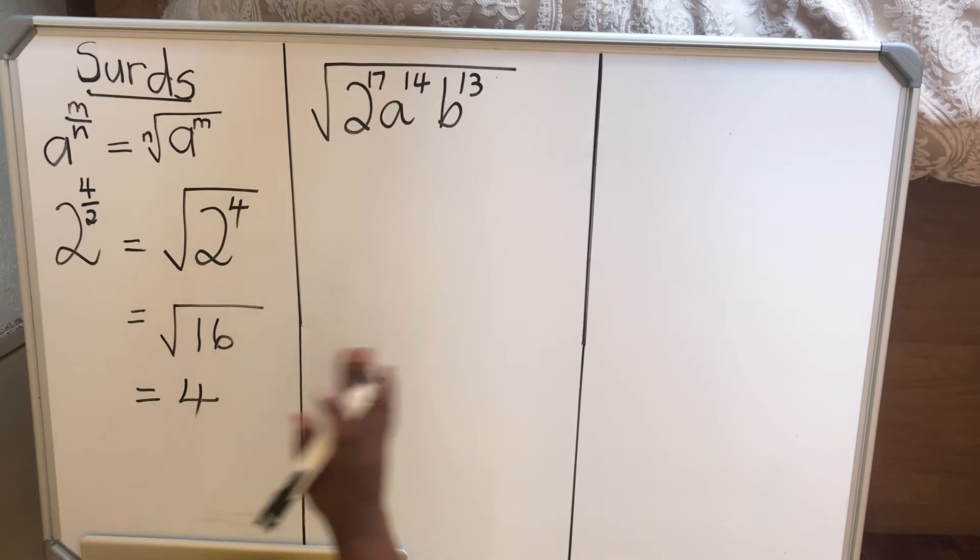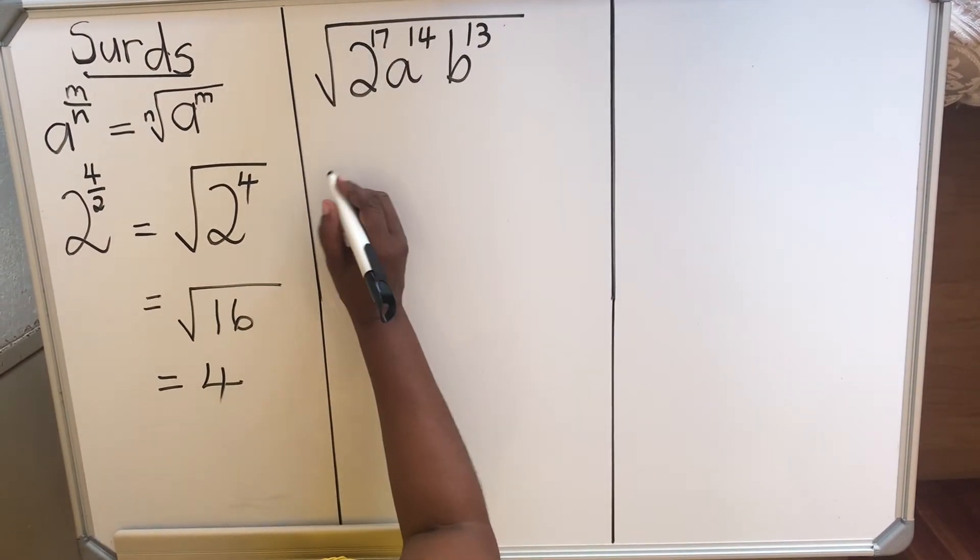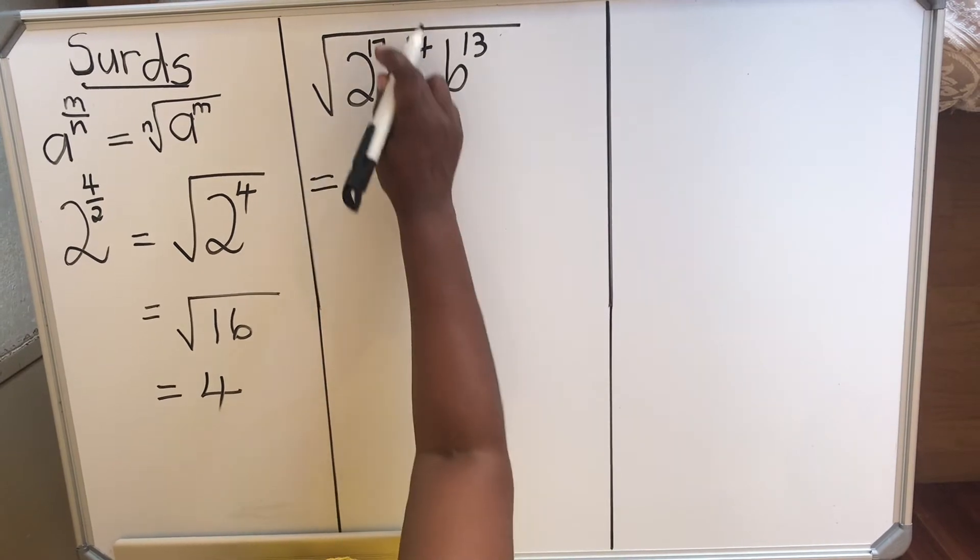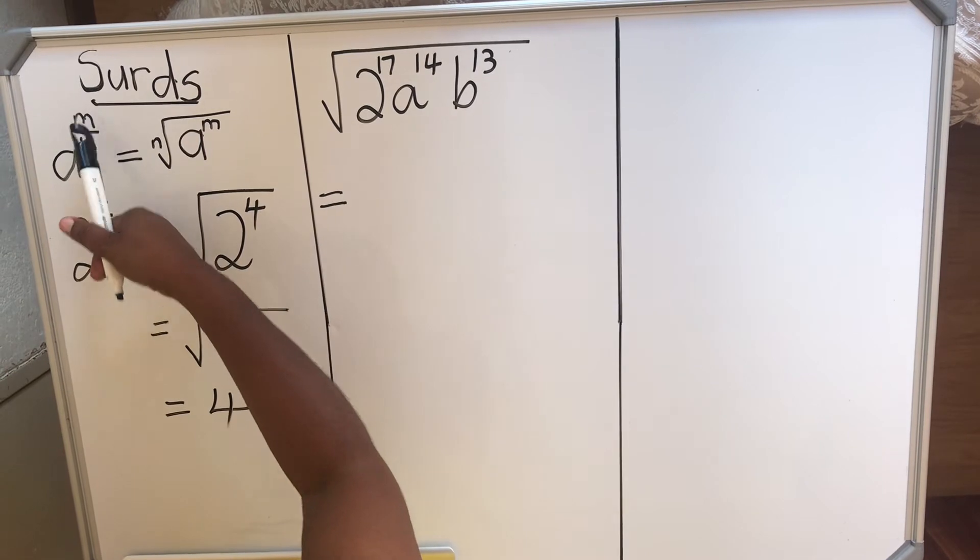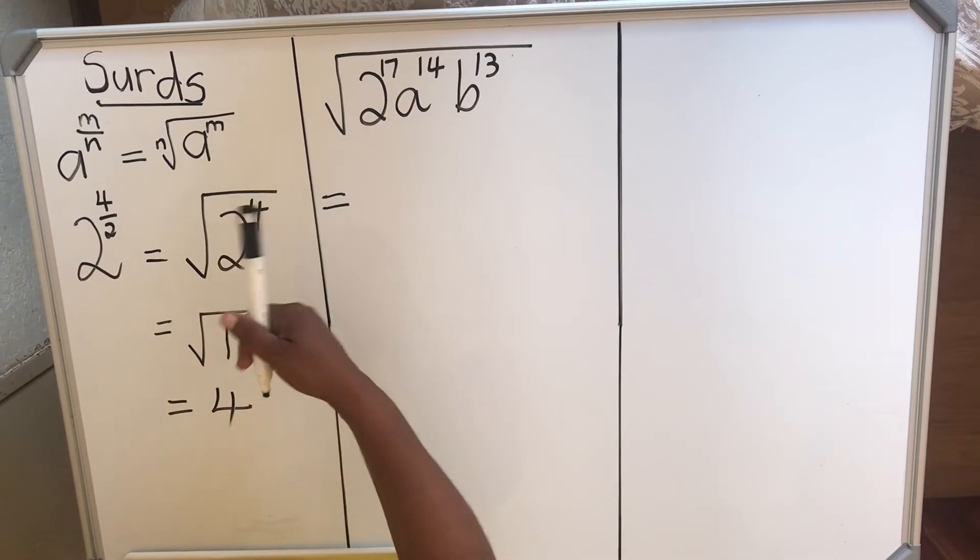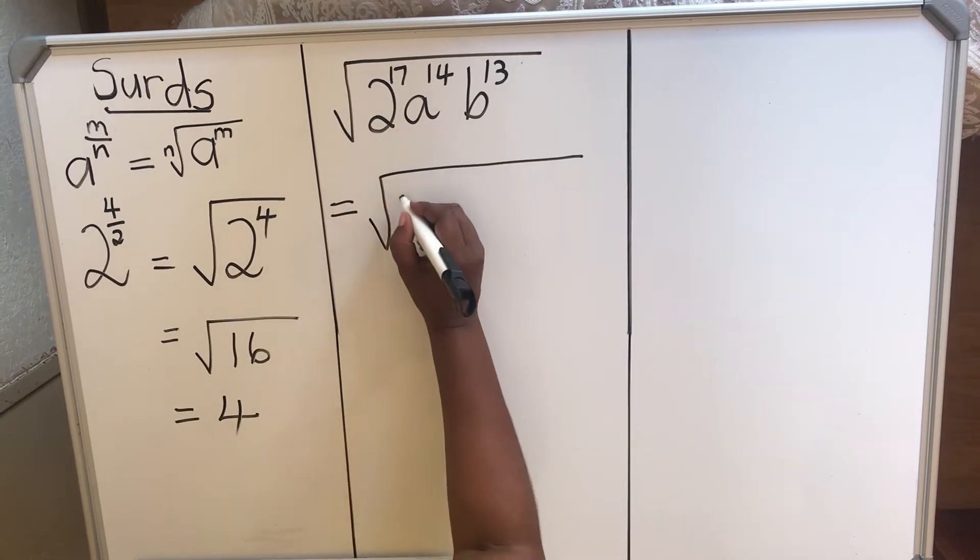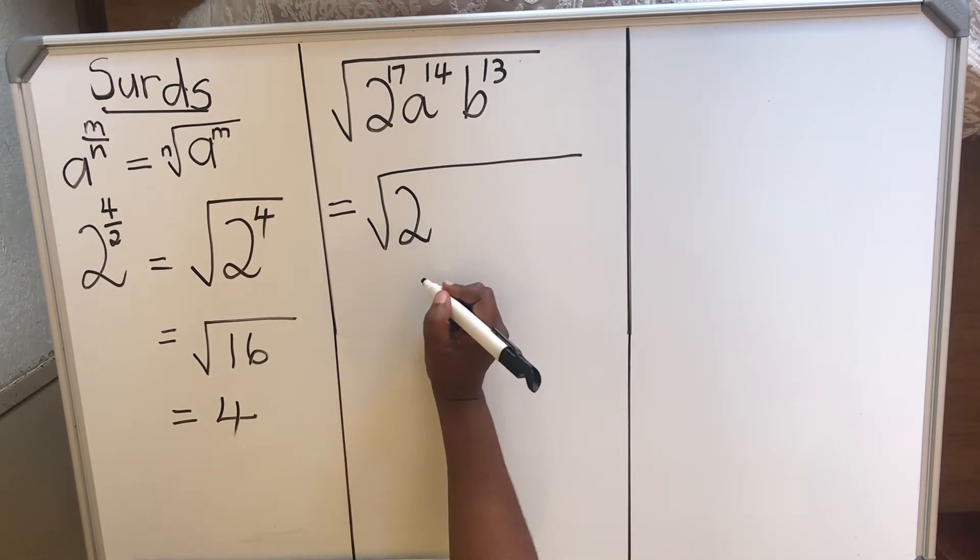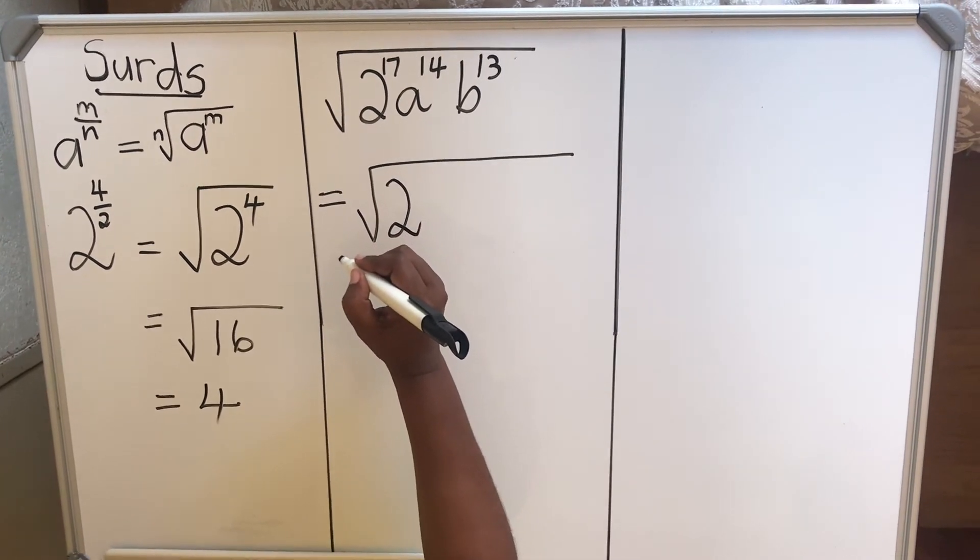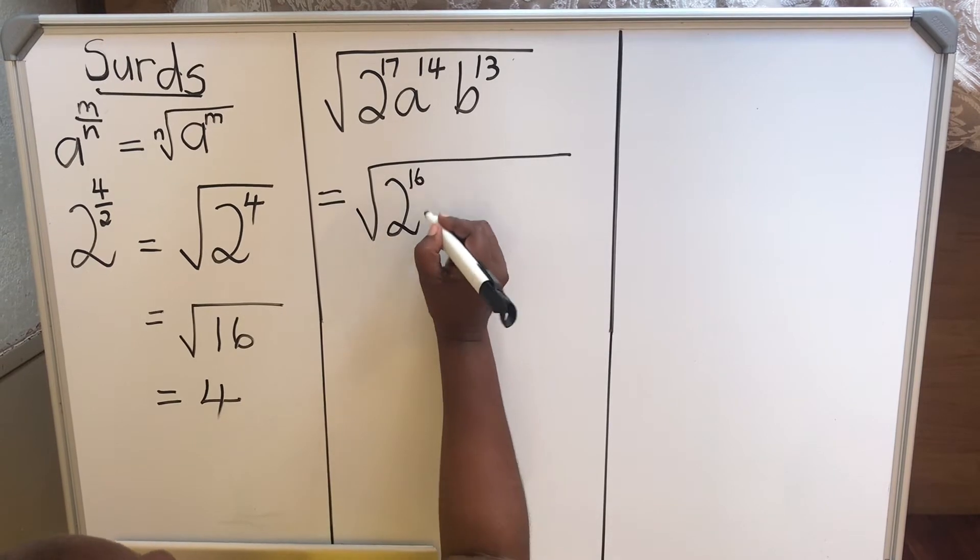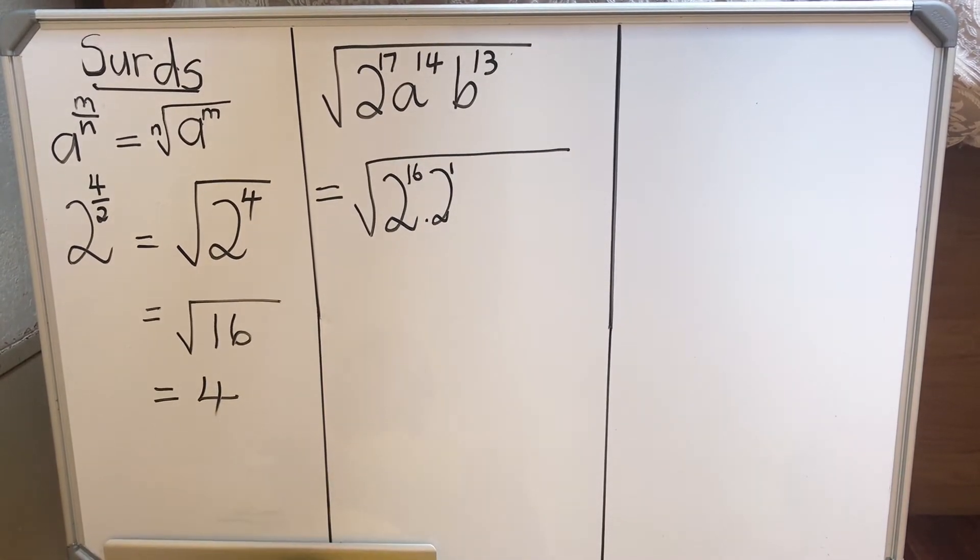When the instruction says simplify the surd, you remember when there's nothing there, there's a 2. So you're going to make your exponents be powers of 2, because you have to divide by 2. Now, you're going to use reverse law 1 of exponents. 2 to the power 17: 17 is 16 plus 1. 16 is a factor of 2, so you'll have 16 and 1, reversing the law 1 of exponents.